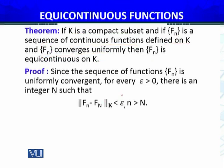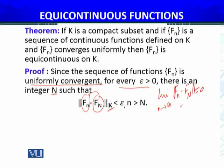Since the sequence of functions {fn} is uniformly convergent, for every ε > 0, there is an integer N such that ||fn - FN||K < ε. This is the definition of uniformly convergent sequence of functions. As n approaches infinity, ||fn - FN|| equals 0. It's the same thing, equivalent.